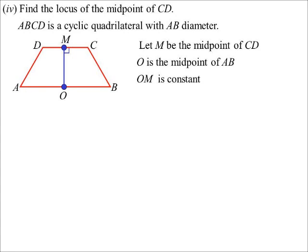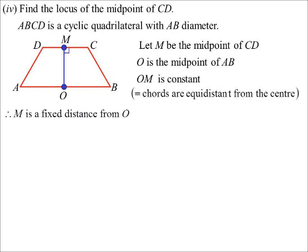O would be the center of the circle of this cyclic quad. Now, the distance from O to M will be constant. The reason I know that is, remember, CD is of constant length. So it doesn't matter where CD is, that chord in this cyclic quadrilateral is always the same length. And we know that equal chords are equidistant from the center. So it doesn't matter where CD is, its distance to the center of the circle must always be the same. So therefore, M is always a fixed distance from O. What's the locus? We talk about a point that's a fixed distance from another point. We get a circle.